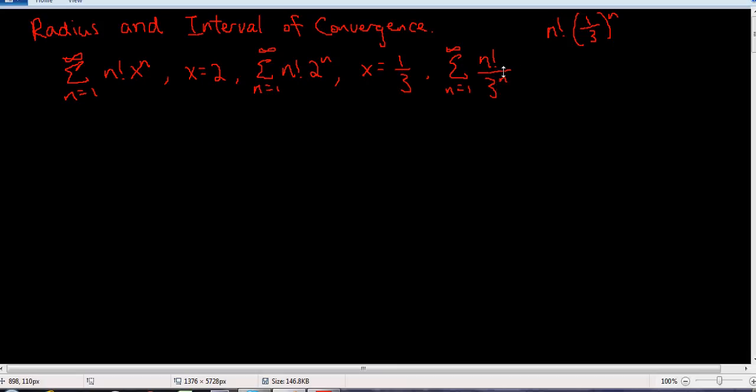So anyway, it turns out, even for x equal to 1 third, this is not going to converge. So you might be thinking, oh, there's no values it converges for. Well, that's almost the case, except for 0, right?